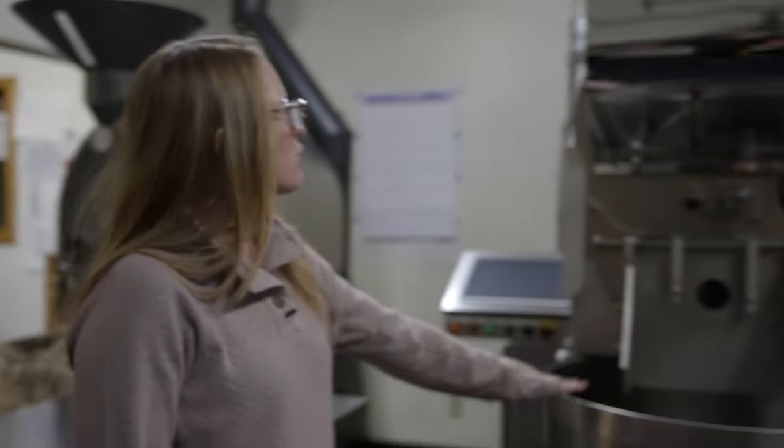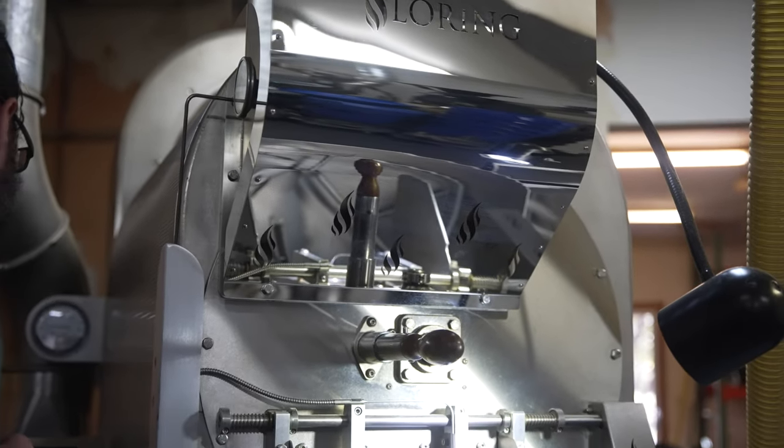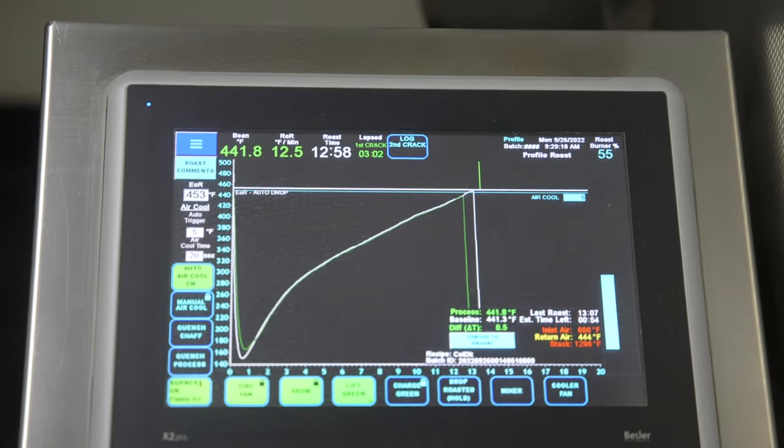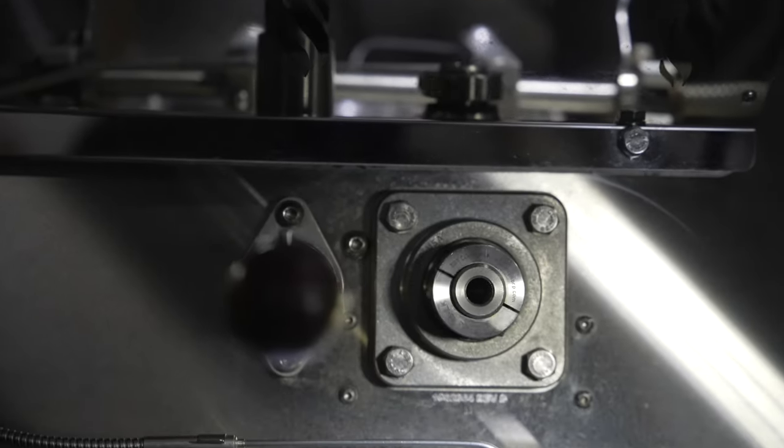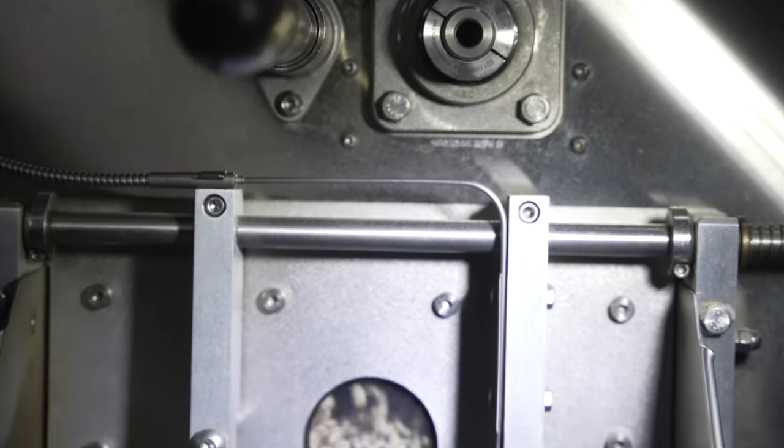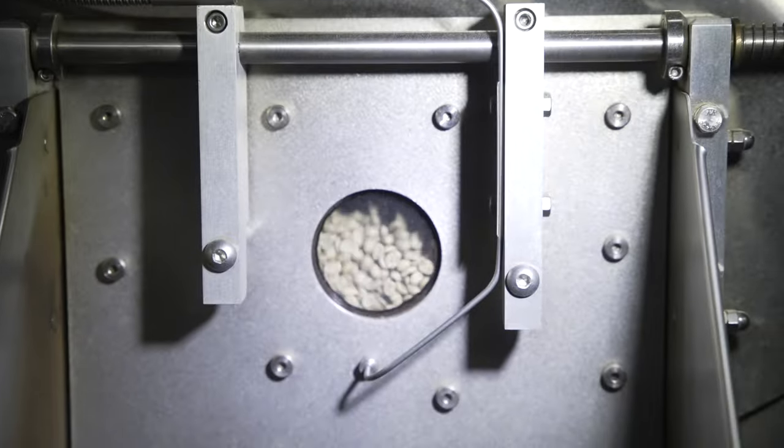These are our newest coffee roasters, they're Lorings. They are a really easy way of using technology to control the roast level and get perfection in what you're looking for out of each coffee that you make.